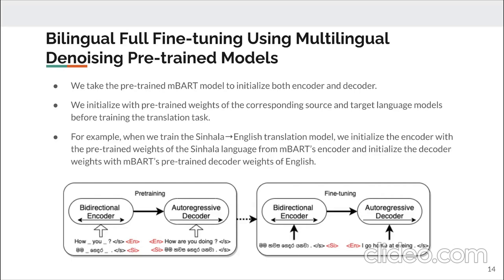We take the MBART pre-trained model to initialize both the encoder and decoder. For example, when training a Sinhala-English translation system, we first initialize the encoder with pre-trained weights for Sinhala from MBART's encoder, and initialize the decoder with MBART's pre-trained decoder weights for English. Then we train our Sinhala-English translation model by giving Sinhala sentences as source input and corresponding English sentences as target output.